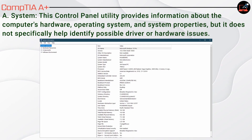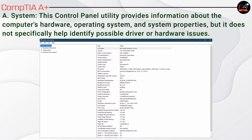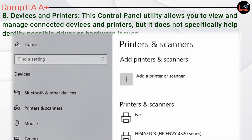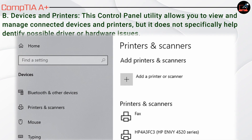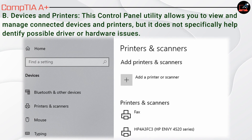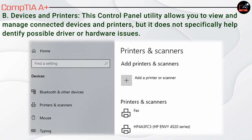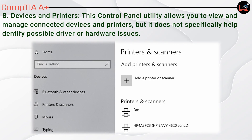A. System — this Control Panel utility provides information about the computer's hardware, operating system, and system properties, but does not specifically help identify possible driver or hardware issues. B. Devices and Printers — this utility allows you to view and manage connected devices and printers, but does not specifically help identify driver or hardware issues.